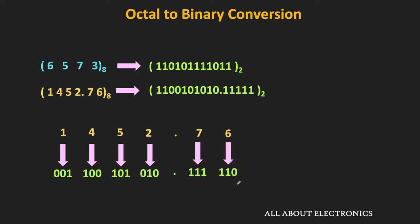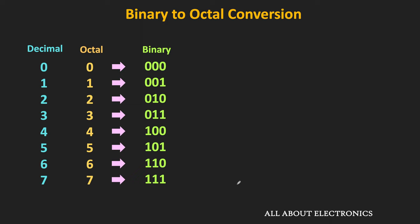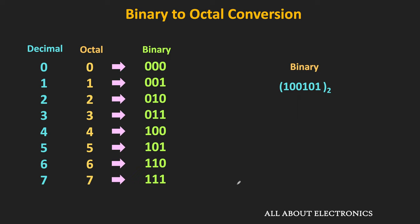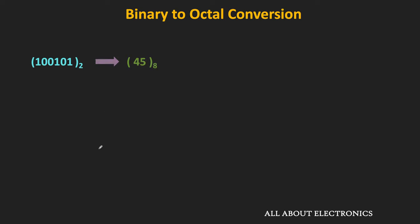For binary to octal conversion, starting from the least significant bit, we make groups of 3 binary digits and replace each group by the corresponding octal digit. For example, for binary number 100101: grouping from the LSB gives 101 and 100, which correspond to 5 and 4. So the equivalent octal number is 45.